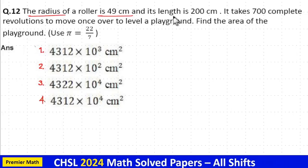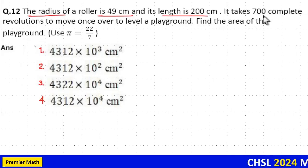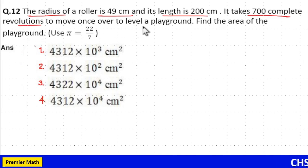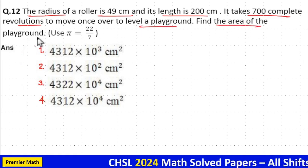The radius of a roller is 49 cm and its length is 200 cm. It takes 700 complete revolutions to move once over to level a playground. Find the area of the playground.